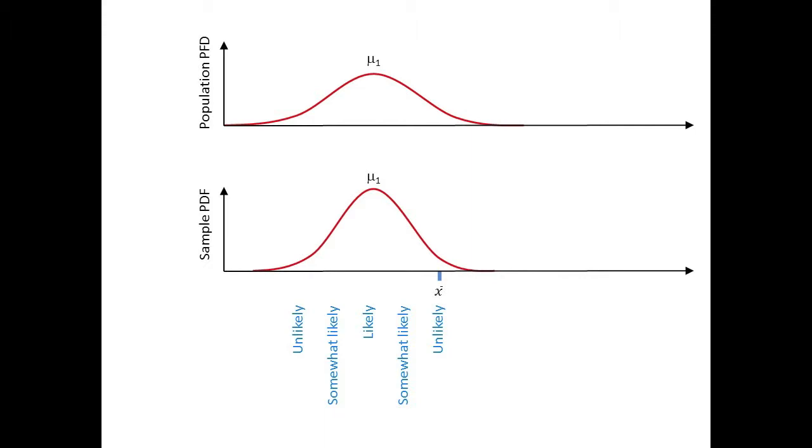As you can see, it is unlikely that the population shown will produce the particular X̄ we observed. One can quantify the probability by reading the height of the sample distribution over X̄.